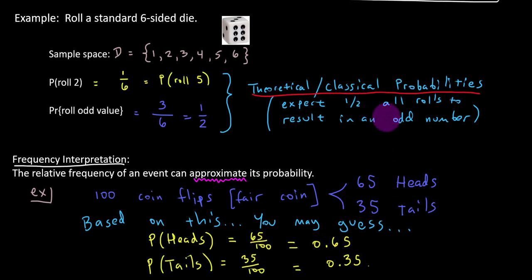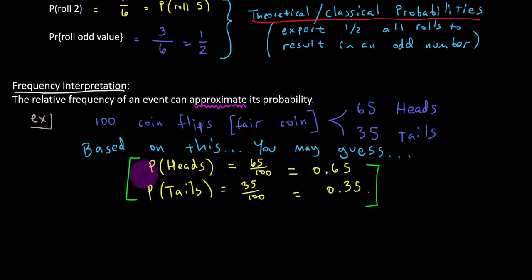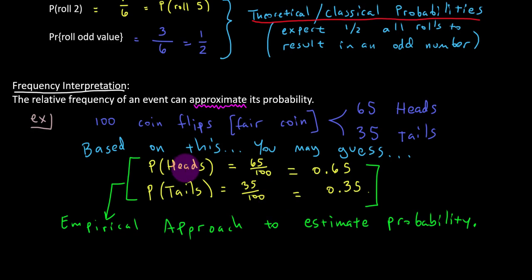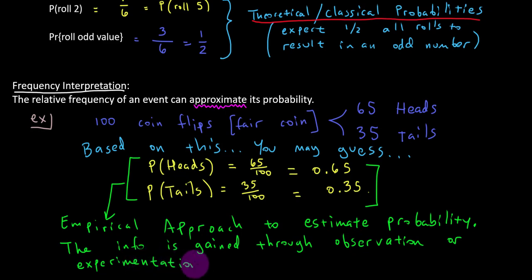Now to contrast with this previous example, this is considered empirical probabilities. So this is called the empirical approach to estimating probabilities. And this is where the information that was used to estimate these probabilities was gathered from either observation or experimentation.